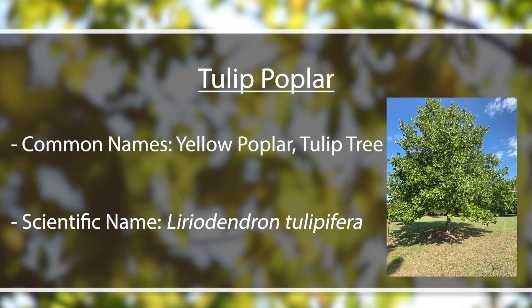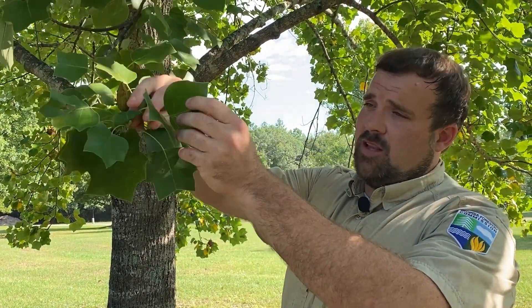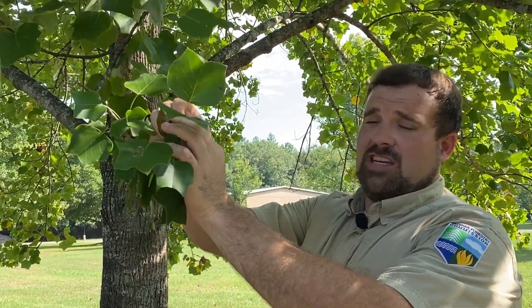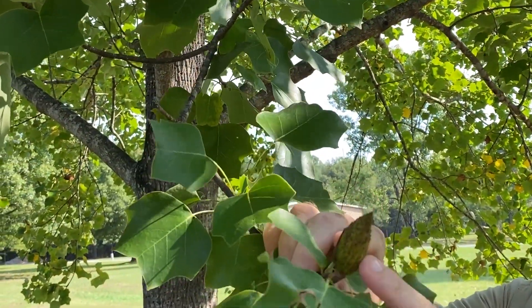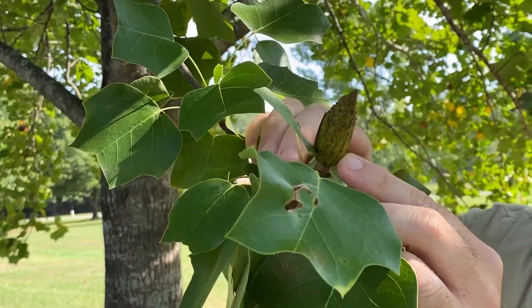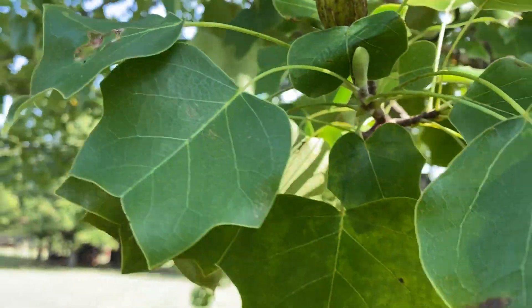So here we have a tulip poplar — you'll also hear it called yellow poplar or tulip tree. Some key defining characteristics of a tulip poplar are the leaf shape and leaf arrangement. You can see this leaf is almost shaped like a tulip flower, hence the name tulip poplar. Also later in the summer you get these really big showy flowers that look like big giant tulip flowers. This leaf shape and arrangement and those flowers in the later summer are really key defining characteristics of a tulip poplar.